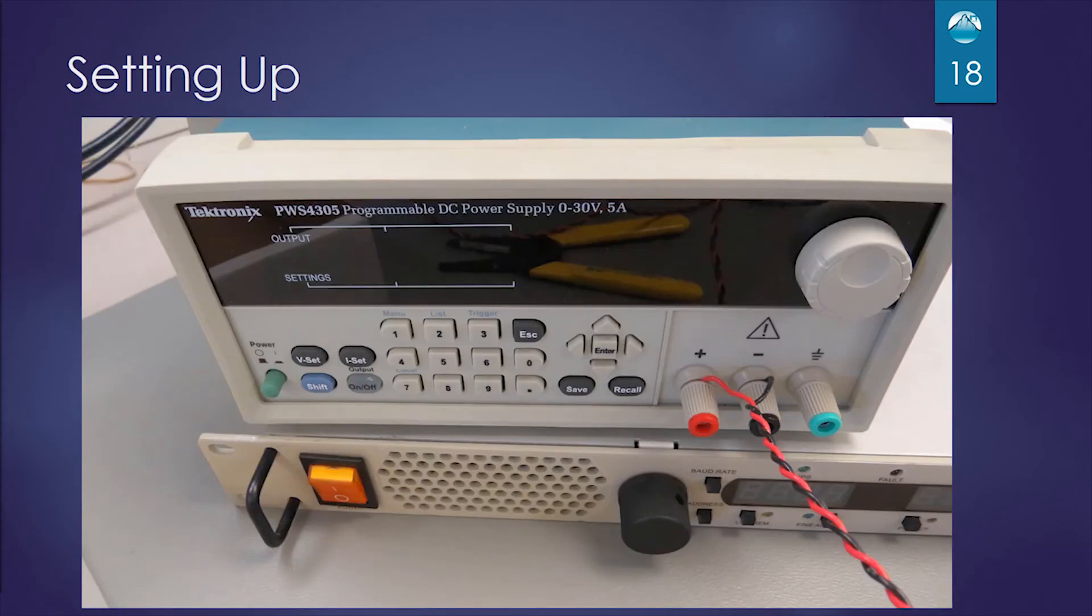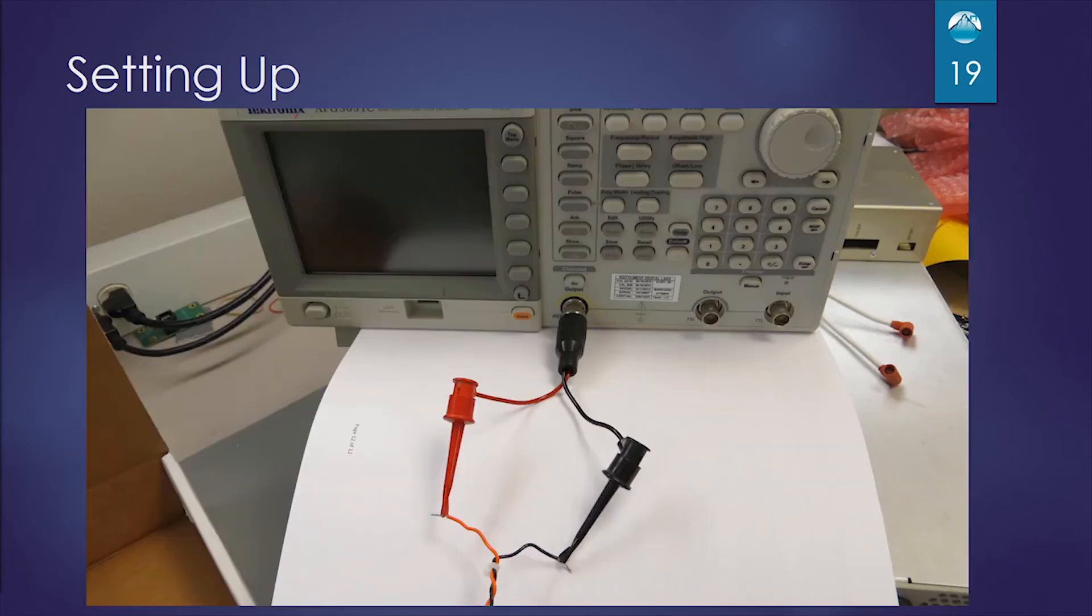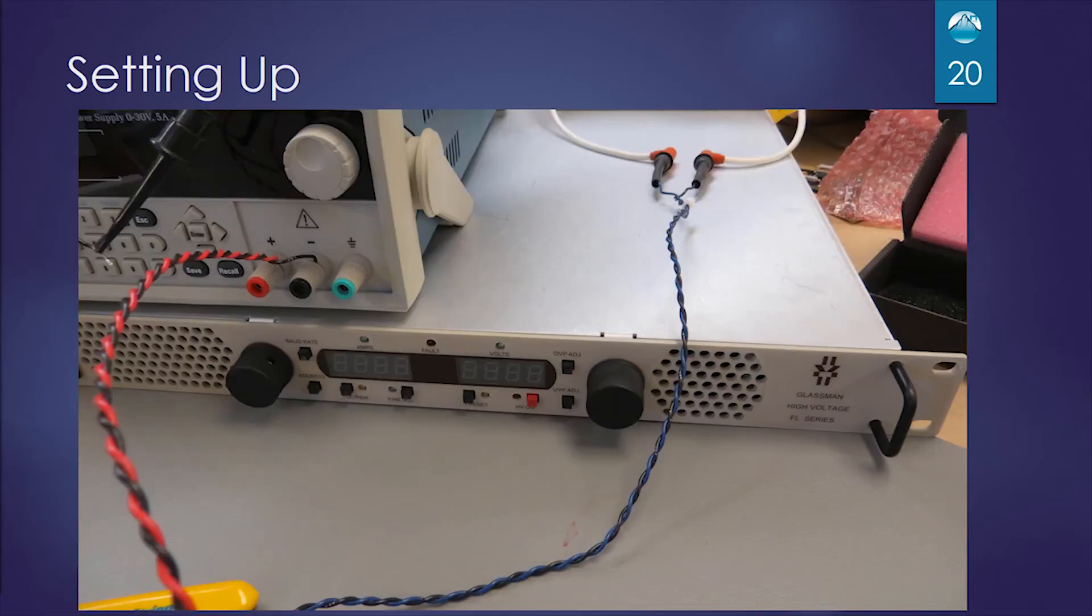The first thing we're going to do is we're going to hook the red and black wire up to the DC power supply. This is our housekeeping supply, the plus 24 volts. Here's our trigger input. We're connecting this to a Tektronix function generator. And this is connected to the orange and black wire. And finally, our high voltage is connected to blue and black to our high voltage power supply.